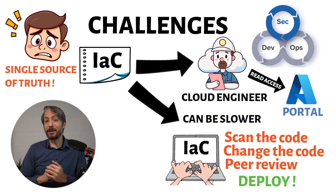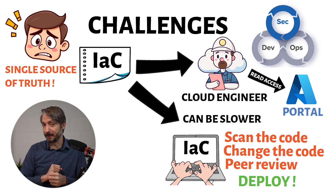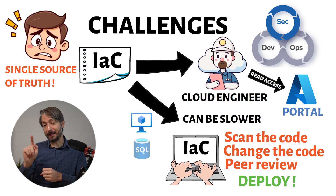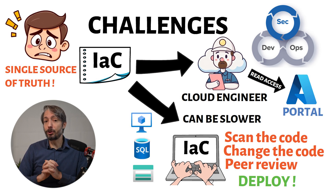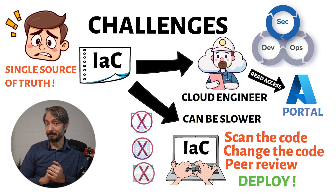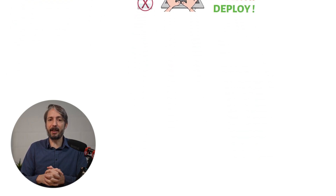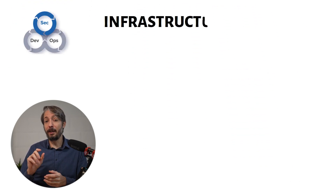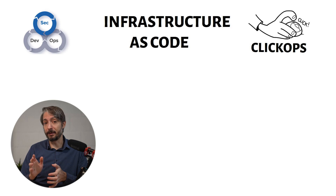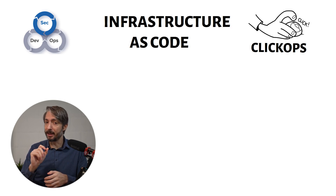Third, Infrastructure as Code is incredibly powerful, but with great power comes great responsibility. You can spin up an entire environment with the click of a button, but you can also destroy an entire environment with that same button or command. Be aware and make sure safeguards are in place, such as resource locks, to prevent deletion of key resources. DevSecOps and IaC versus ClickOps is not entirely black and white — you need to understand both the benefits and the drawbacks to make the best decision.